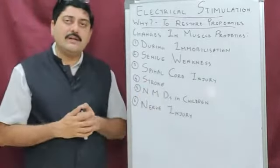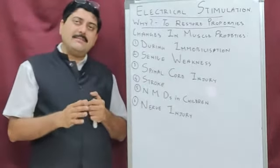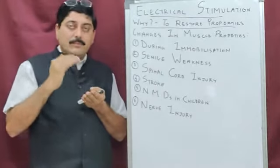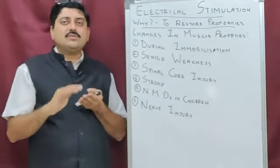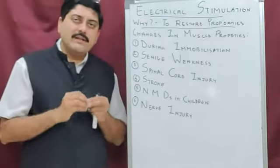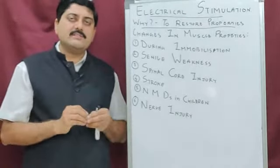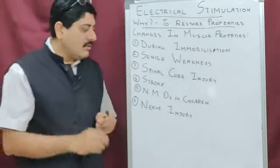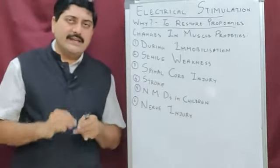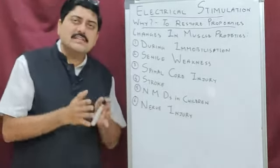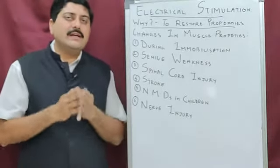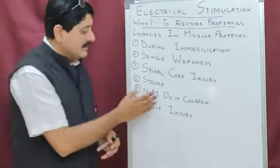The next cause is spinal cord injury. Spinal cord injury causes paralysis of the muscle below the point of injury. Spinal cord injury-induced paralysis can cause fibrosis or inactivity where the muscle loses its contractile properties, and to maintain them we have to use electrical stimulation of the muscle.